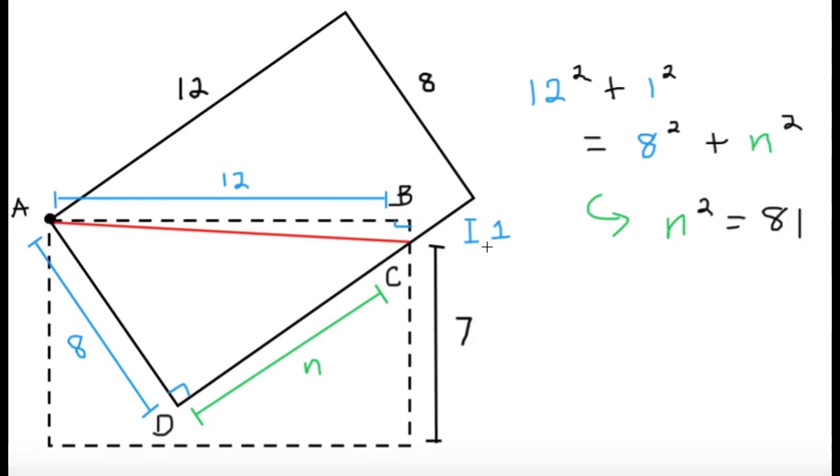Now I know that BC will be 1 because it's given to us that this part is 7, so simply 8 minus 7. This part will just be equal to 1, and then the 8 here is just one of the dimensions of the rectangle, and here we have a missing length of n.